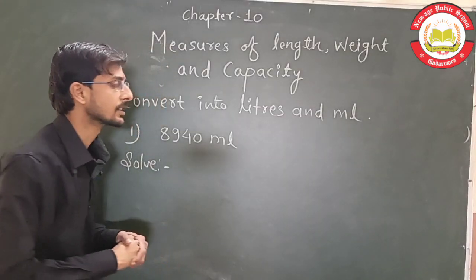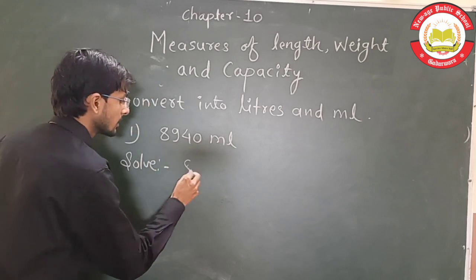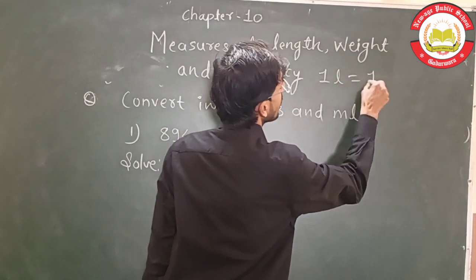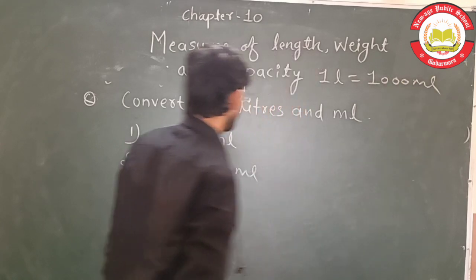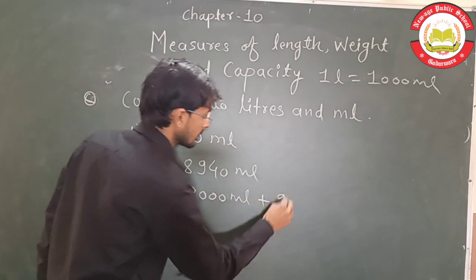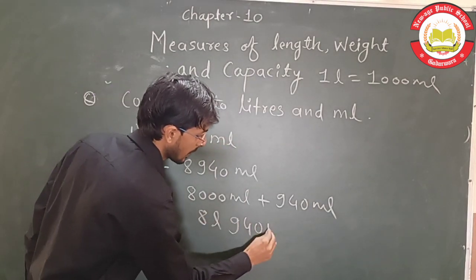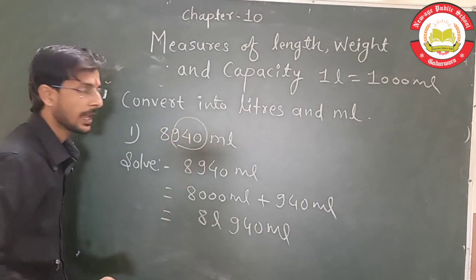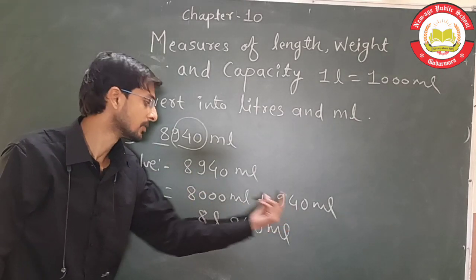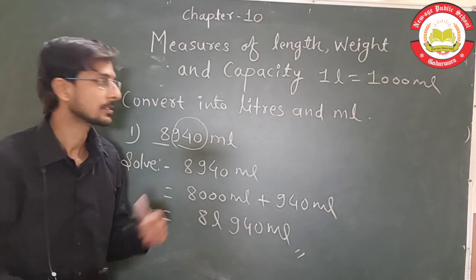Students, convert 8940 ml into liters and ml. We know 1 liter equals 1000 ml. So we distribute: 8000 ml plus 940 ml. Since 1000 ml equals 1 liter, 8000 ml becomes 8 liters, and the remaining 940 ml stays. So the answer is 8 liters and 940 ml.